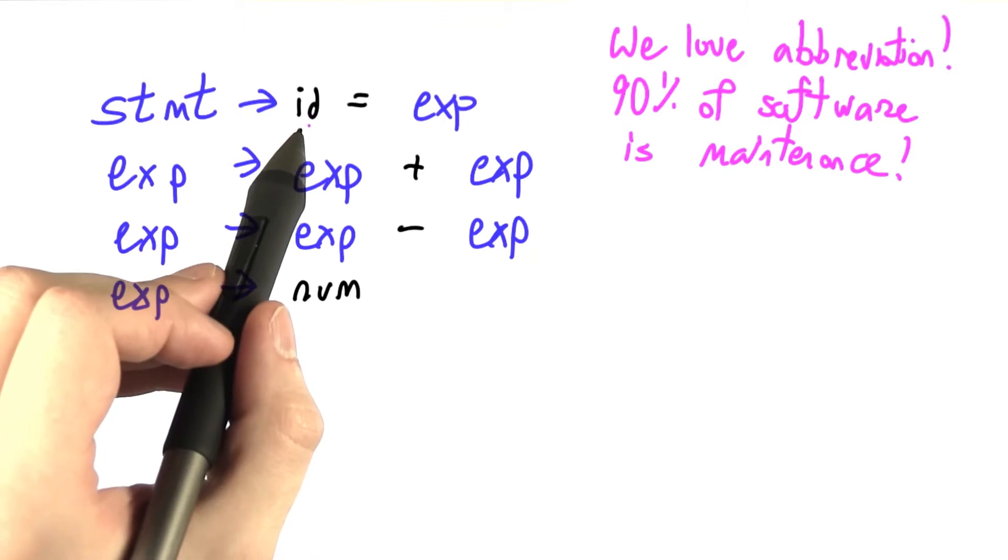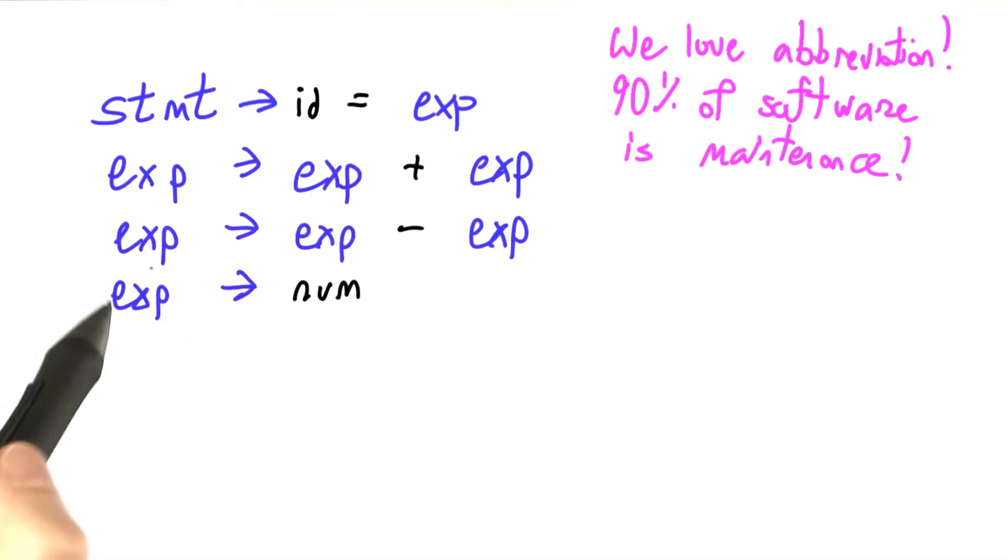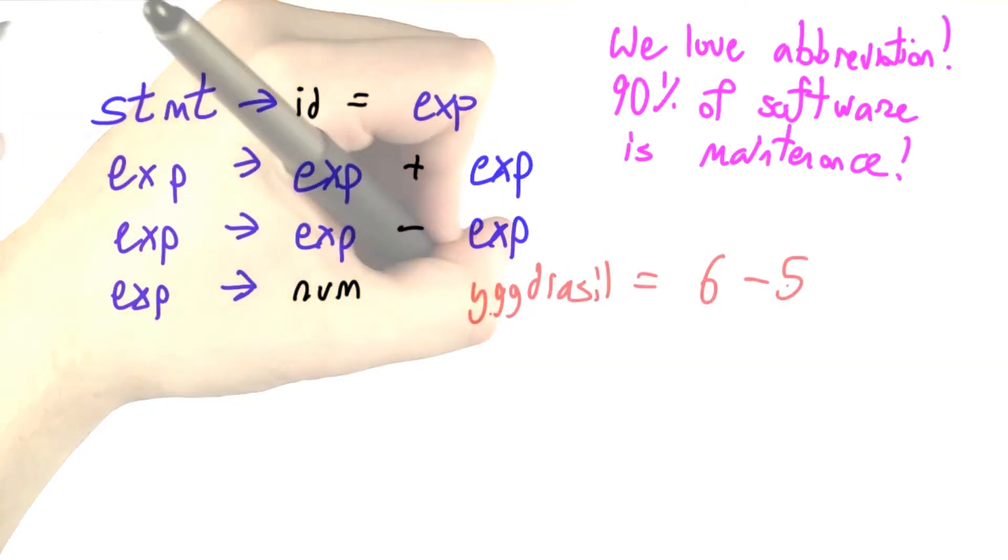Here's the grammar. The statement goes to identifier equals expression. And expression is the same sort of arithmetic we've seen before. We're now going to consider this particular sentence: Yggdrasil equals 6 minus 5.